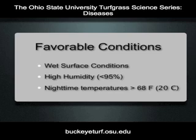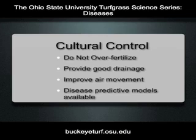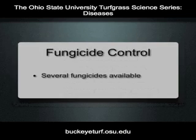Cultural practices for reducing the severity of brown patch include balanced fertilization, providing adequate drainage, and promoting air movement around greens surrounded by trees. Additionally, there are several disease prediction models available that can serve as an aid in predicting the probability of brown patch occurring. Several fungicides are also available that control brown patch.